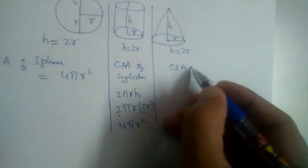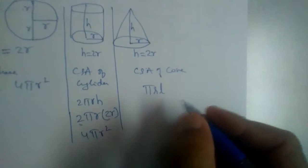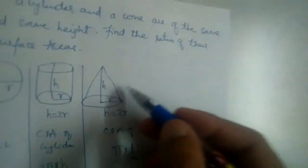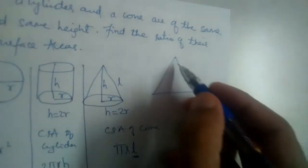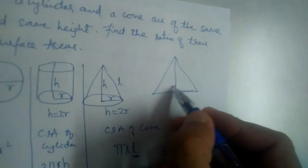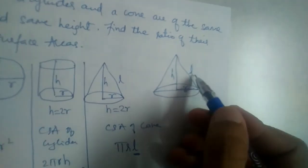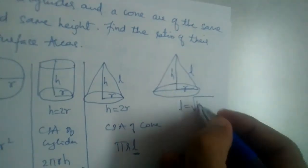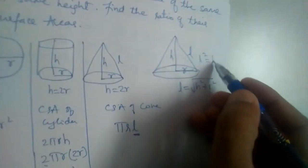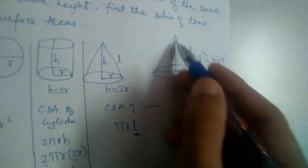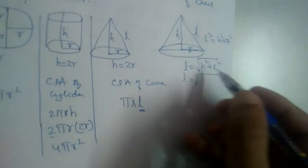Now let us find the curved surface area of the cone. The curved surface area of a cone is πRL. We have to find the value of L because it is not given. If this is L, we have a right-angled triangle with height H, radius R, and slant height L. Using Pythagoras theorem: L = √(H² + R²).